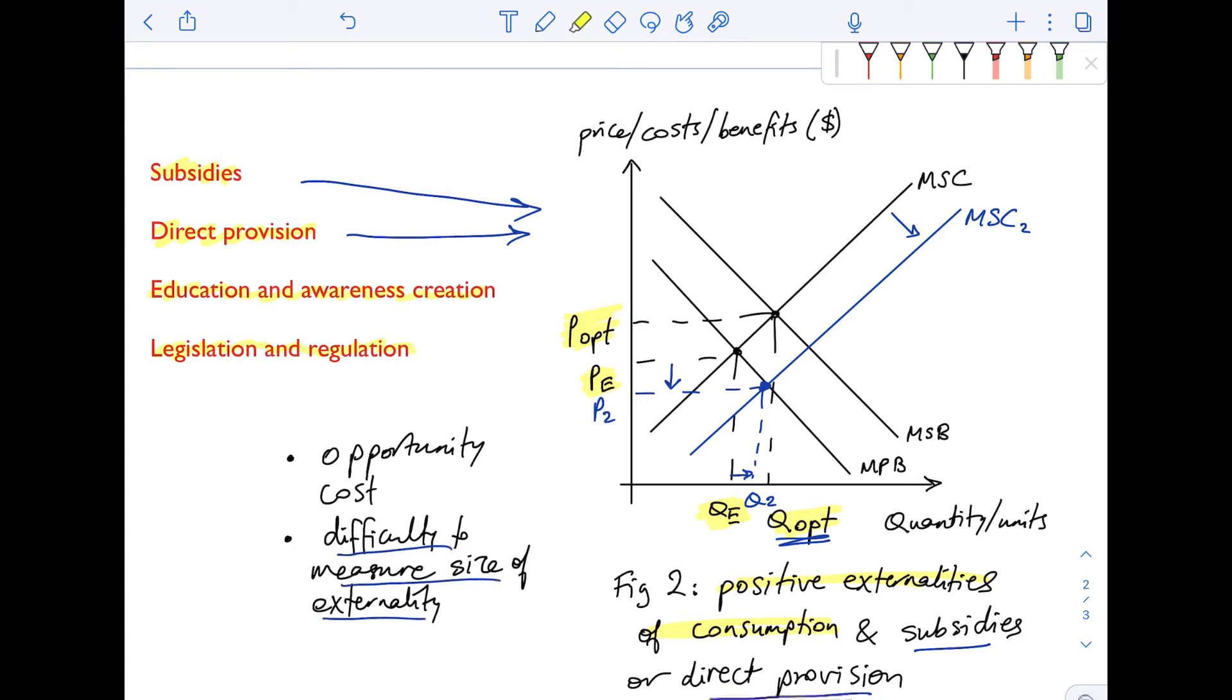Again, I am not picking a point that is basically directly at QOPT because remember, it's difficult to measure the size of the externality to know the exact amount of subsidy or the exact amount of direct provision the government should provide. And again, these policies come with a very high opportunity cost and need to be justified to the taxpayers.